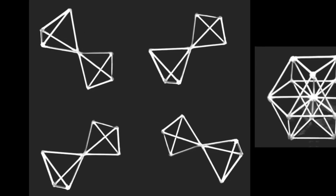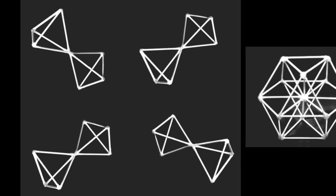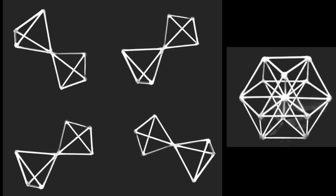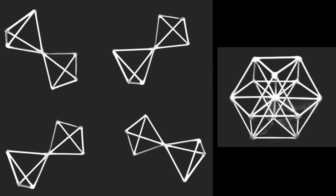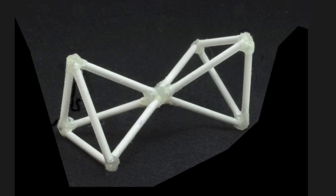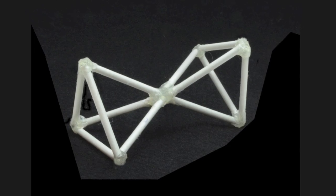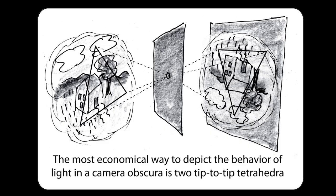The real essence of the cube octahedron are the eight tetrahedra from which it is made. These eight tetrahedra are arranged in four pairs of tip-to-tip tetrahedra, which I call Bucky bow ties, because Bucky liked wearing a bow tie. The bow tie is the most economical way to depict the behavior of light in a camera obscura, or a camera, or in your eye. All of the rays criss-cross right through the center of the point, and an upside-down triangle on one side is a right-side-up triangle on the other.